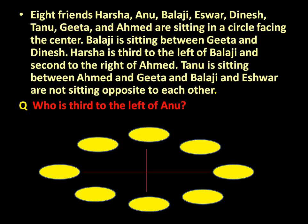Now go statement by statement and put the information in a tabular format. Statement one: Balaji is sitting between Geeta and Dinesh. Since it is a circular arrangement, you can start from any point, so place Balaji between Geeta and Dinesh.